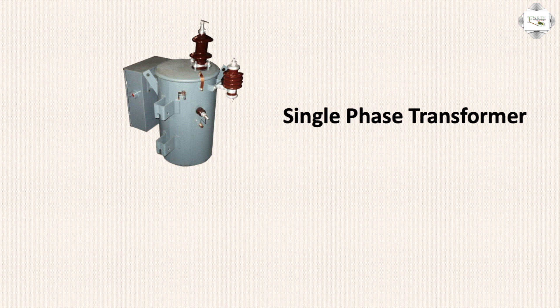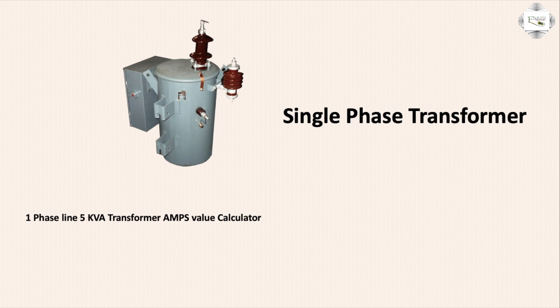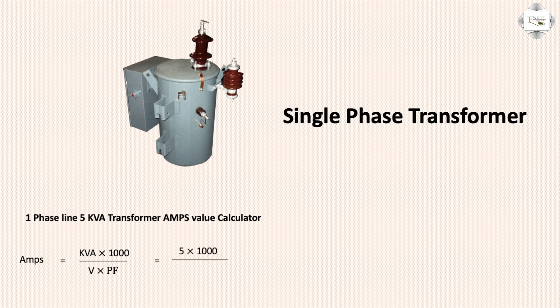For a single-phase 5 KVA transformer, we calculate the ampere value. The formula is: Ampere equal to KVA into 1000, divided by V into PF. Here, V means voltage and PF means power factor.